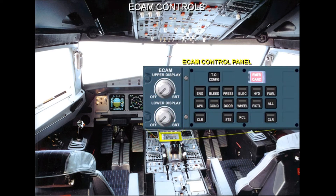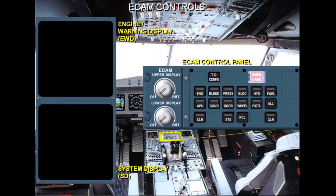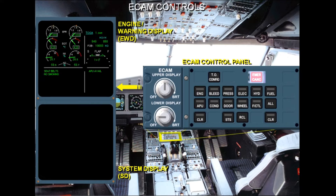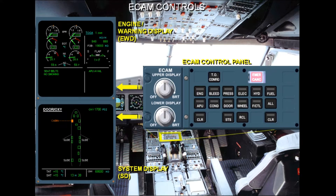The engine warning display is divided into two main parts. The upper area is used to display the main engine parameters, the fuel on board, and the slat flap position. The lower area is used for warning and caution messages and memo messages.